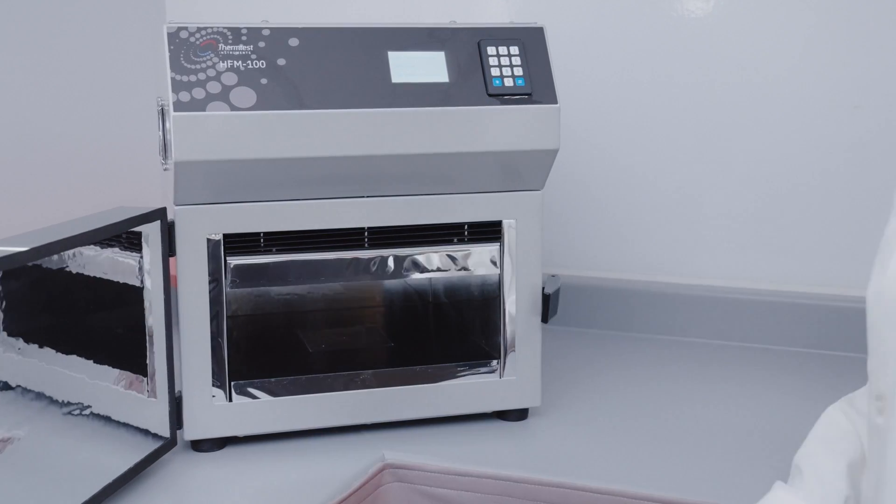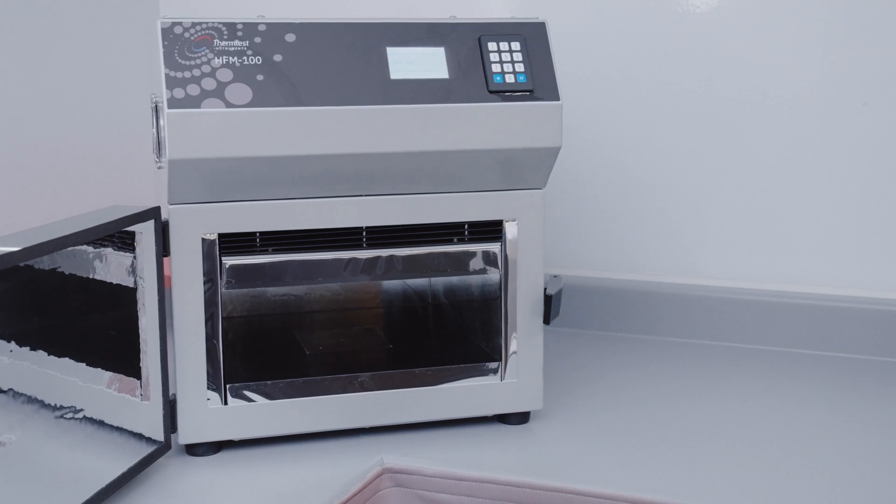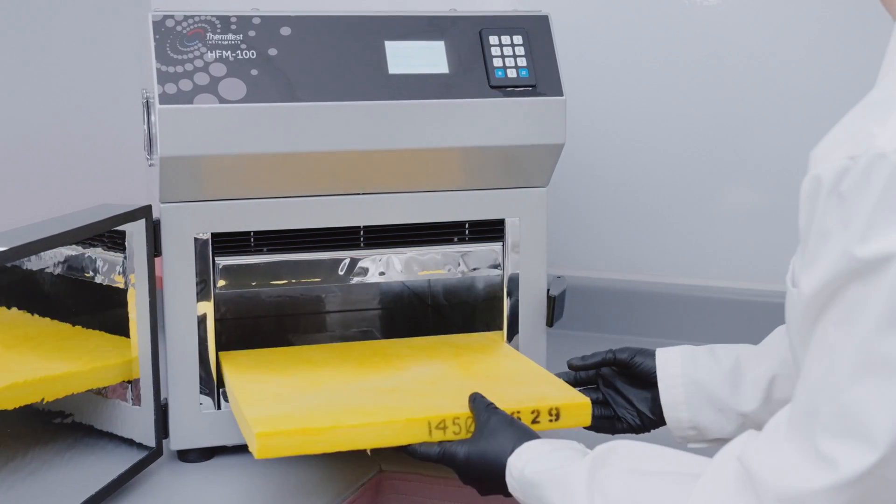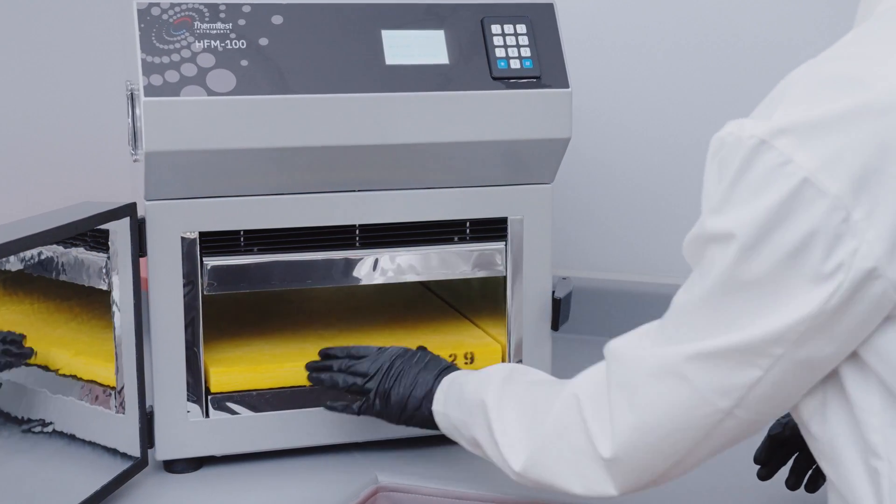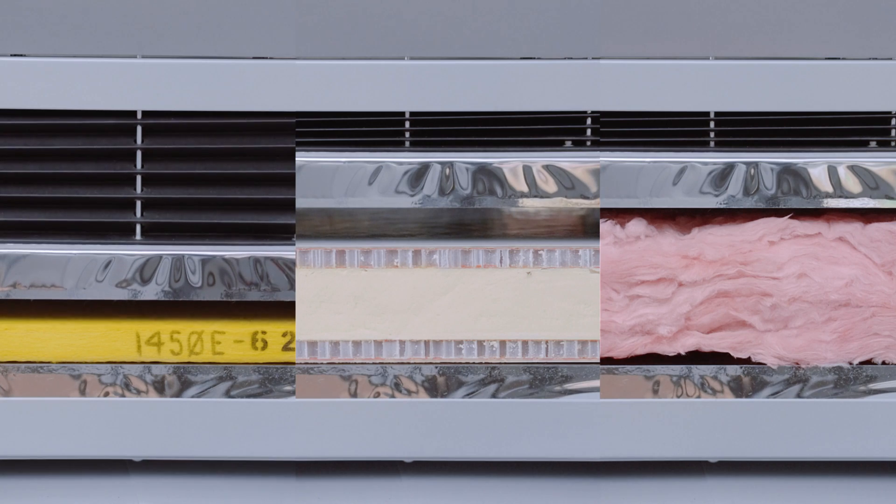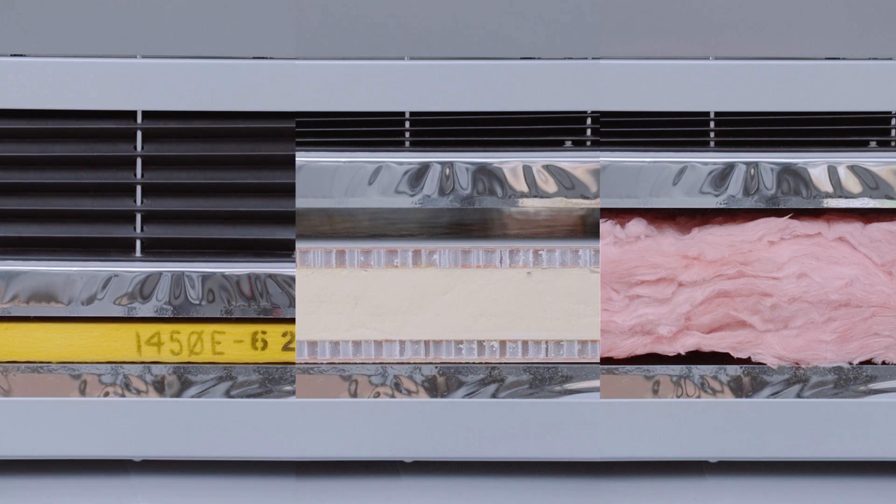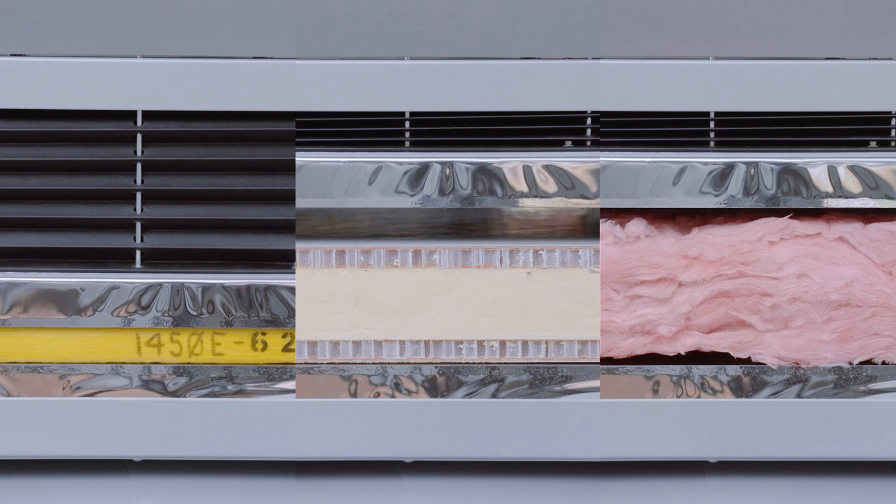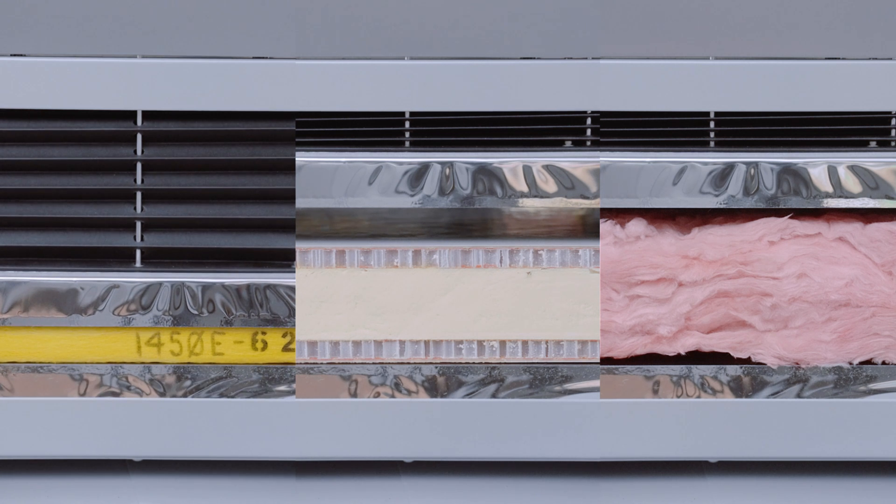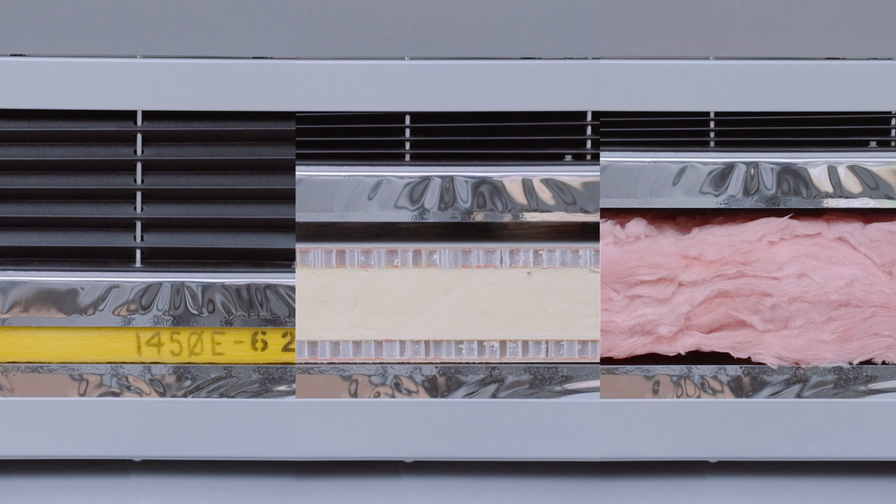The HFM 100 is able to test samples up to 300 by 300 by 100 millimeters in dimension. The through thickness measurement of thermal resistance and thermal conductivity is ideal for testing complex layered structures and heterogeneous samples which are typical to the construction industry.